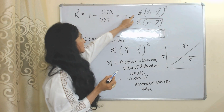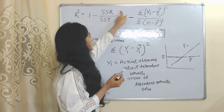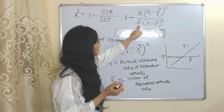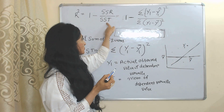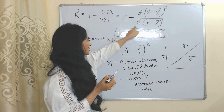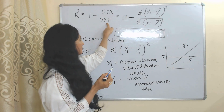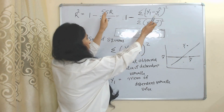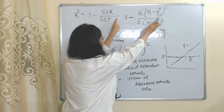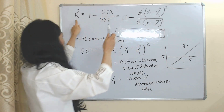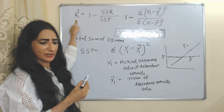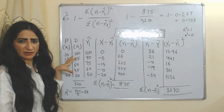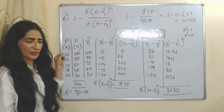So this is the formula to calculate SSR, and this is the formula to calculate SST. We substitute these formulas into the R-squared expression to get the final formula to calculate the value of R-squared. Now we will see one numerical example of R-squared.